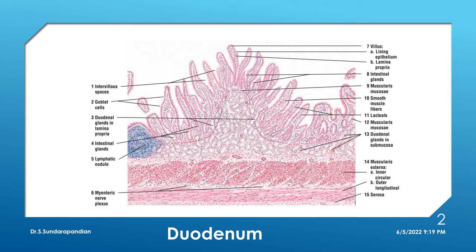Why do we have Brunner's glands in the duodenum? They secrete thick mucus with a high concentration of bicarbonate. The chyme from the stomach is already acidic, so to neutralize that acidity, Brunner's glands secrete alkaline mucus. The duct of these glands opens into the mucosa and ultimately reaches the lumen. The function is to neutralize the acidic chyme.